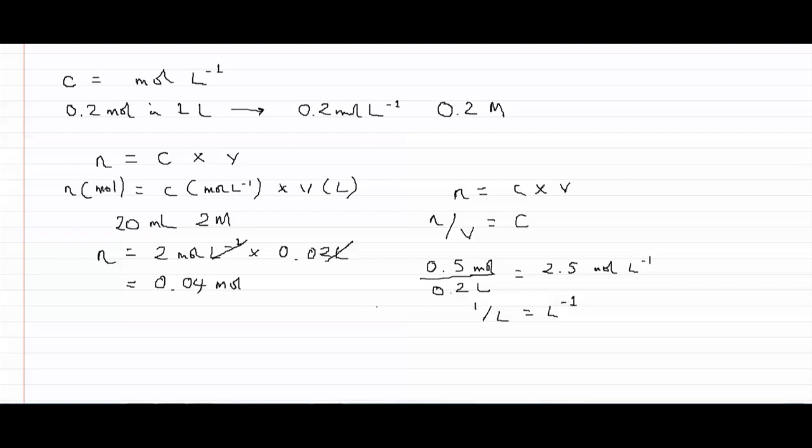We can also use the same relationship, n equals c times v, if we want to know what volume we would need to dissolve a certain number of moles in to reach a desired concentration. Let's say we have 0.5 moles and we want to produce a two molar solution. We rearrange this in a slightly different way to say that n over c equals v.